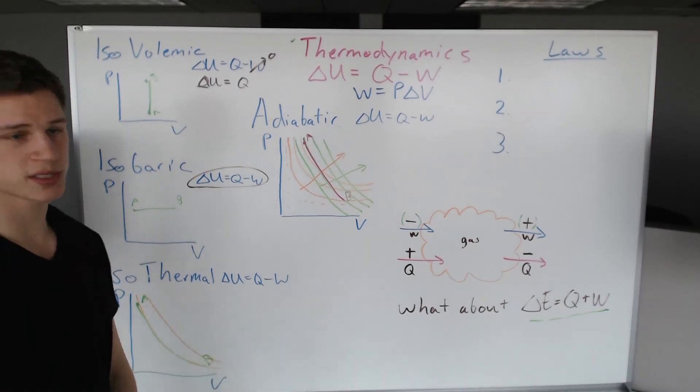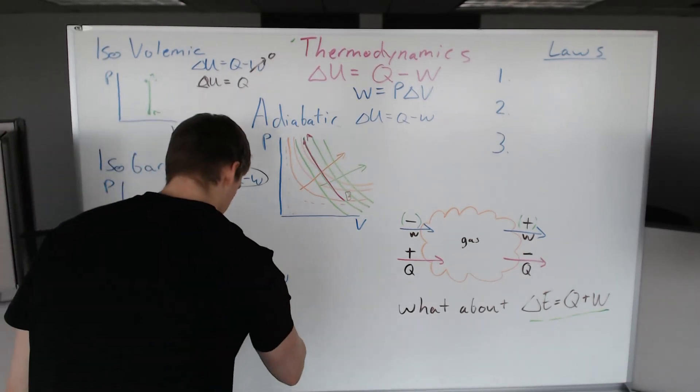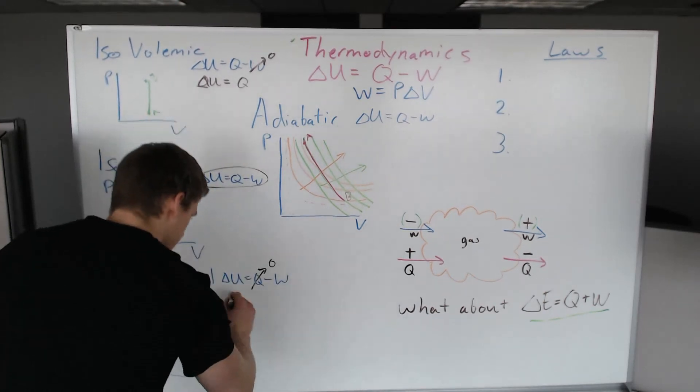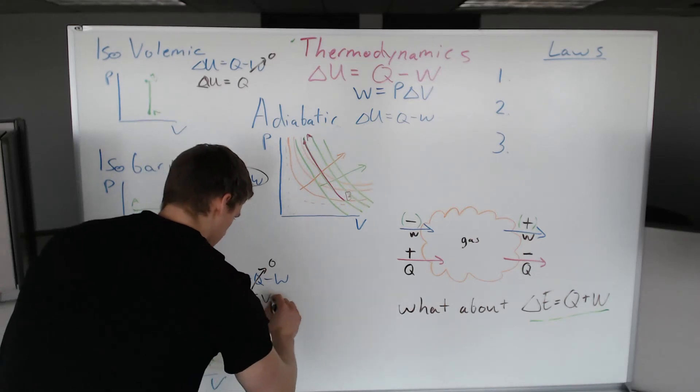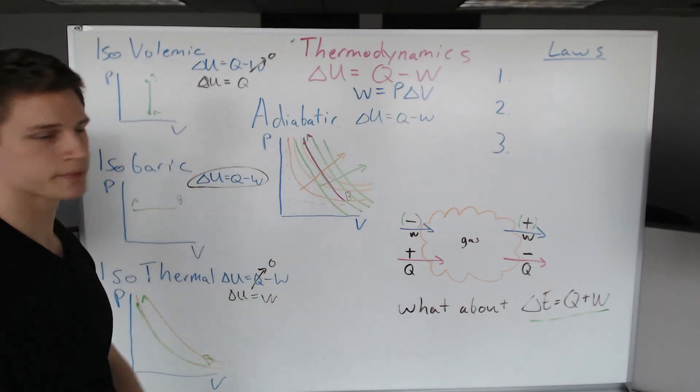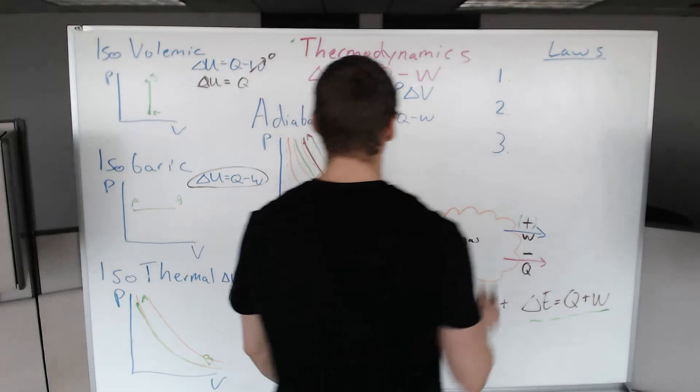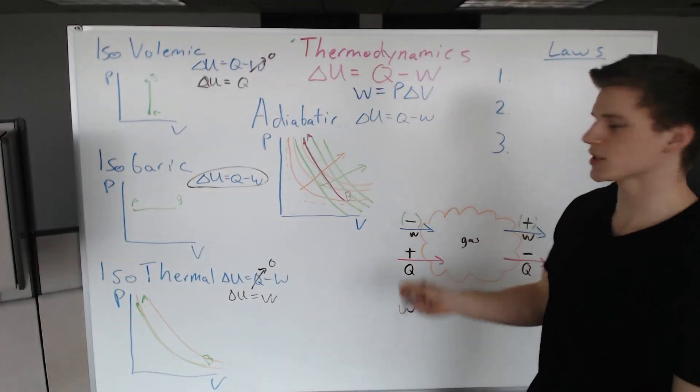Going down to isothermal, we have the same temperature line, so what do we expect? Q is equal to zero. That means that the change in internal energy ΔU equals the change in work.